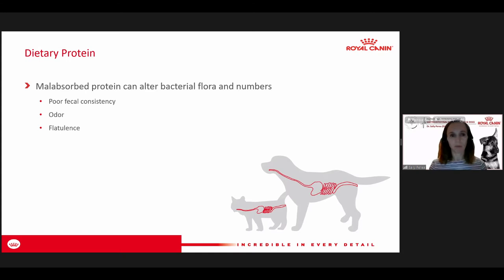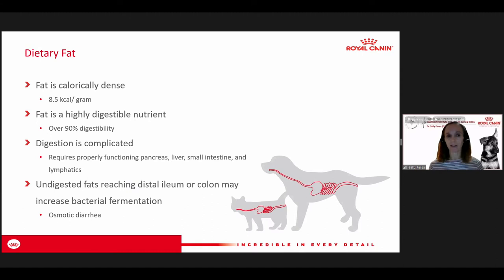Fat is always something we're thinking about a lot with GI disease. We have some GI diseases where we might need to limit fat, but we can also use fat as a really nice nutrient for animals with GI disease because it's calorically dense. While protein is about three and a half calories per gram, fat is about eight and a half calories per gram. You don't need to feed as much of it to get the energy to the animal, which can be helpful when we're trying to limit the volume of food because pets can have some volume intolerance.